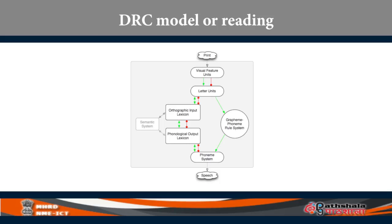On the other hand, after going through the letter units, you can search your orthographic lexicon. Your mental lexicon has information about phonology, morphology, and orthography — you know the writing rules of your language. So from the orthographic lexicon you access meaning from the semantic system, then come to the phonological lexicon, then the phonemes, and then you produce. So these are the two routes: to your right would be the GPC route and the left side will be the lexical whole-word route.